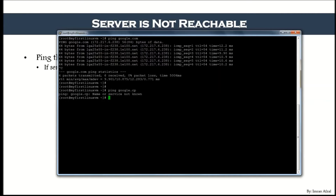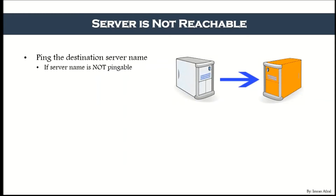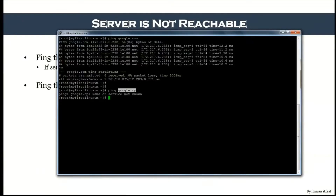That means the DNS entry for google.cp does not exist. So you have to find the IP address of the destination server. If the server name is not pingable, then ping the destination server by IP address. To find the IP address, first check your own documentation, then run nslookup.